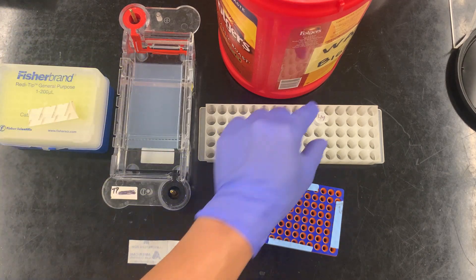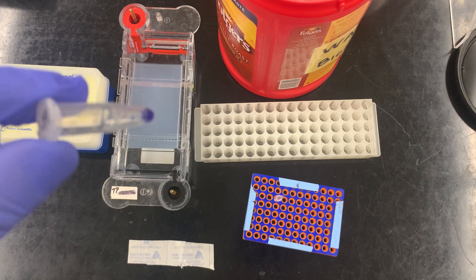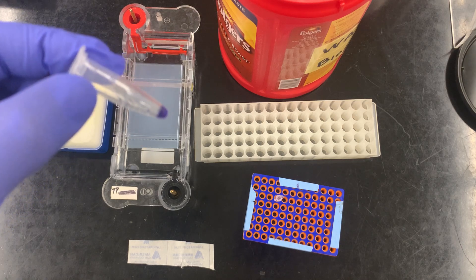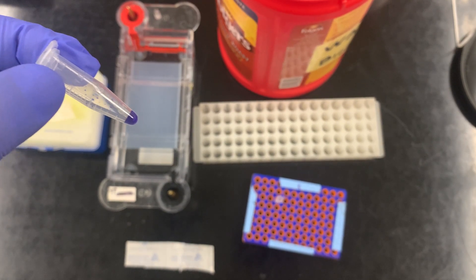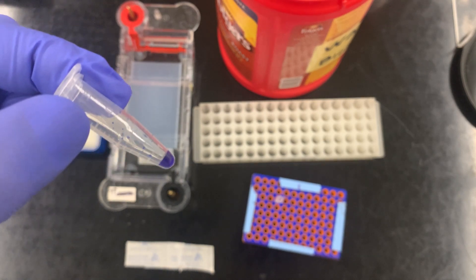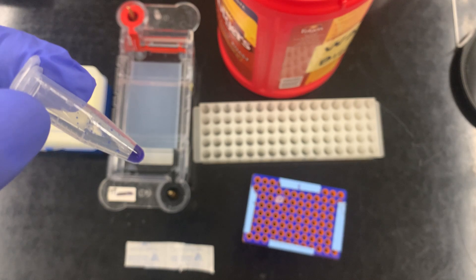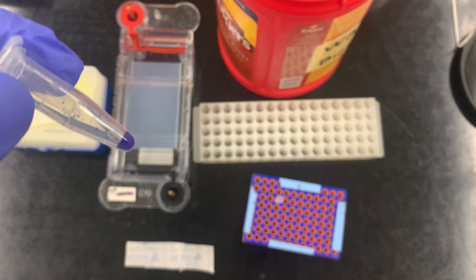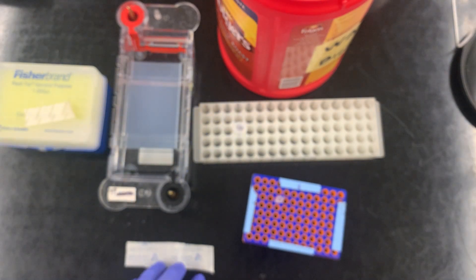This is our loading mix. In this mix we have this thing called a loading dye which has glycerol, this heavy weighty molecule that allows the sample to sink into our liquid. This whole chamber is full of a buffer. It has a dye in there that allows us to see the DNA because ultimately we are going to see the DNA using a UV light, and then a little bit of water to make up the proper concentration.